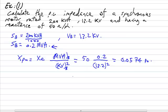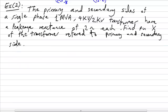This is the answer to example one. Now I will move to the next example. The primary and secondary sides of a single-phase 1 MVA, 4 kV to 2 kV transformer each have a leakage reactance of 2 ohm. Find the per unit reactance of the transformer referred to both the primary and secondary sides.